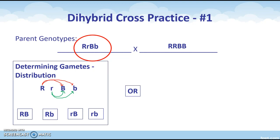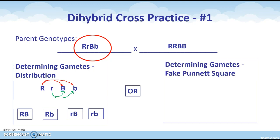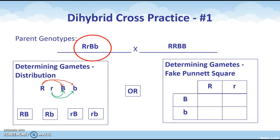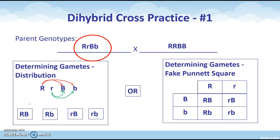The second way is easier — we use a fake Punnett square. We set up a four-box Punnett square, putting the two running or waltzing genotype options on top and the black or brown genotype options on the side, then cross just like a regular Punnett square. That gives: capital R capital B, capital R lowercase b, lowercase r capital B, and lowercase r lowercase b. If you compare these to the distribution method, they're the same four gametes. You can use either method.